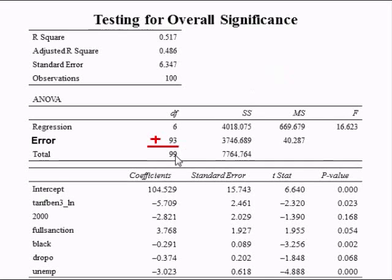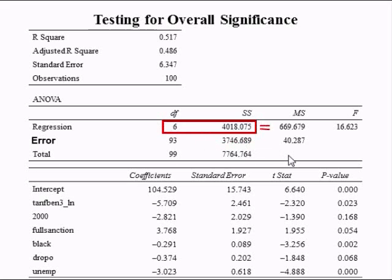The degrees of freedom for the total sum of squares is 99. The total sum of squares is the sum of the sum of squares due to regression and sum of squares due to error. The mean square due to regression is the ratio of the sum of squares due to regression divided by its degrees of freedom.